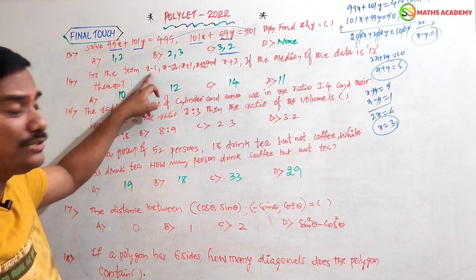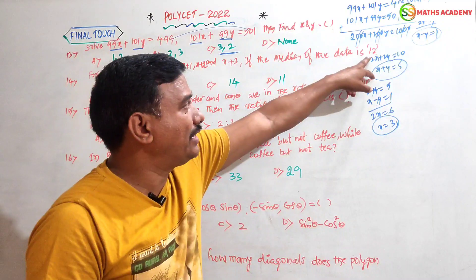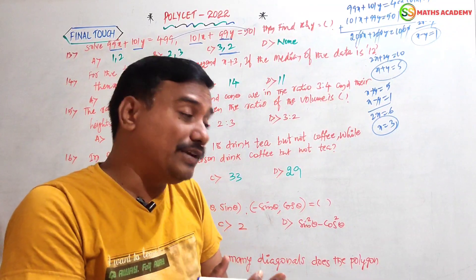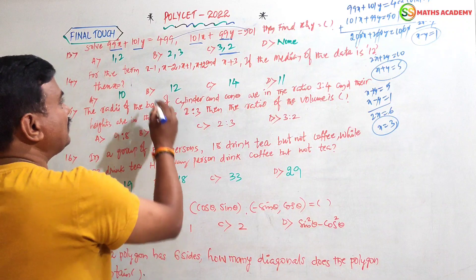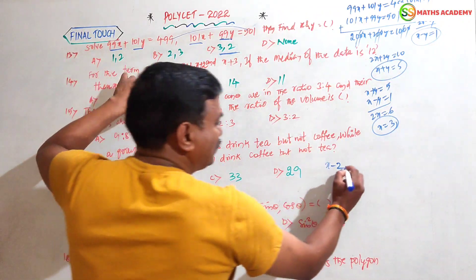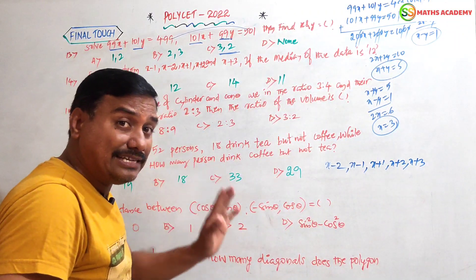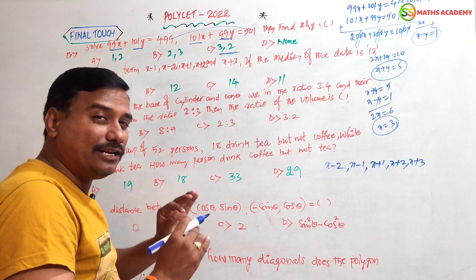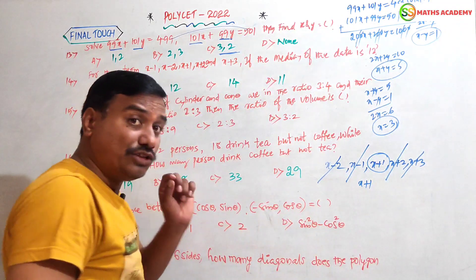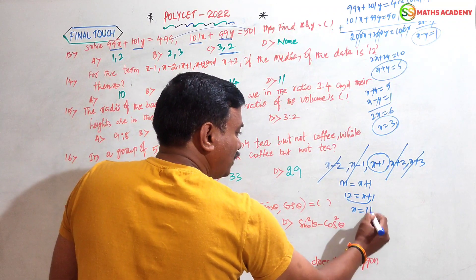Next question: the terms x-2, x-1, x+1, x+2, x+3 — five terms are given and the median is 12. Find the value of x. For ungrouped data we arrange in ascending order: x-2, x-1, x+1, x+2, x+3. Cancelling first and last, second and second-to-last, we get the middle term x+1. Since the median is 12, x + 1 = 12, so x = 11.